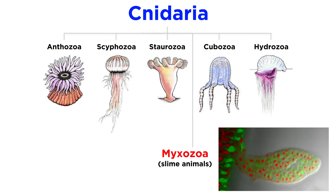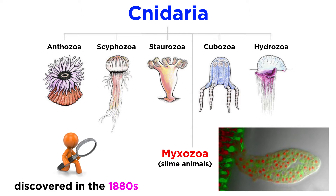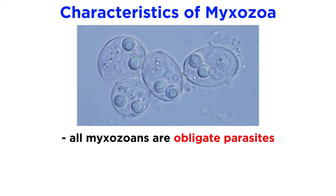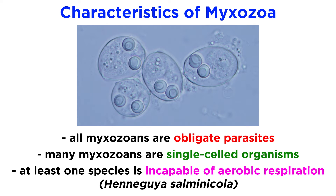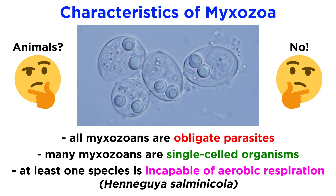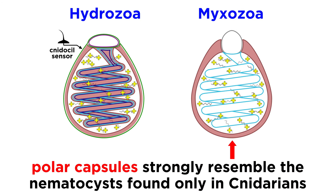The mixozoans, or slime animals, were first discovered in the 1880s and originally classified as protozoans, since all of them are obligate parasites. Many are single-celled, and at least one, Hanegaea salminicola, a common salmon parasite, is incapable of aerobic respiration. So the argument was that since they do not meet all the characteristics of animals, they are not animals. This made sense, except that mixozoans have polar capsules, which closely resemble nematocysts — organelles found in no other creatures except cnidarians.